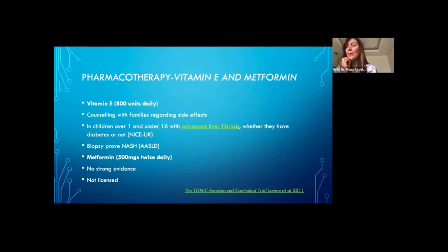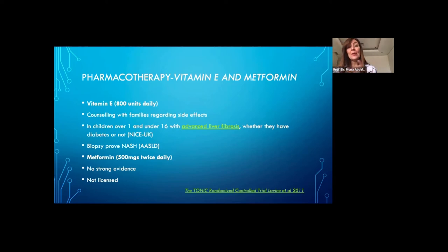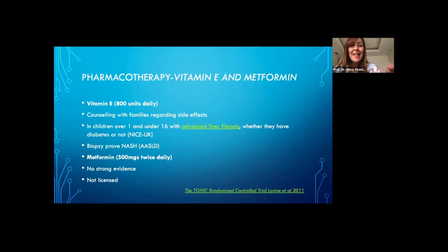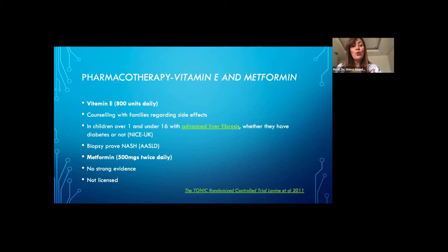Regarding pharmacotherapy: the TONIC trial — a multicenter randomized placebo-controlled study — looked at vitamin E 800 units per day and metformin 500 mg twice daily in children aged 8 to 17 years. The study showed a reduction in ALT levels at 96 weeks compared to baseline, but there was no sustained response. Vitamin E for NAFLD should only be started in children with biopsy-proven NASH, not just obesity and abnormal LFTs, and parents should be counseled that the long-term effects of vitamin E are unknown.